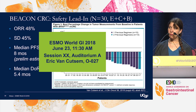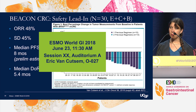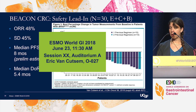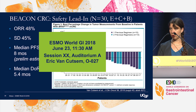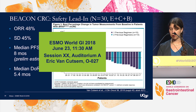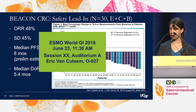If the randomized portion of this trial recapitulates what we've seen so far in the safety lead-in, I expect that the combination of encorafenib, cetuximab, and binimetinib will become an approved standard of care for BRAF V600E-mutated colorectal cancer.